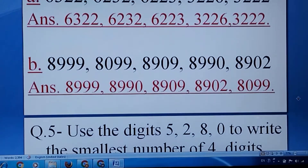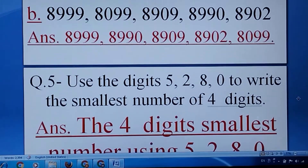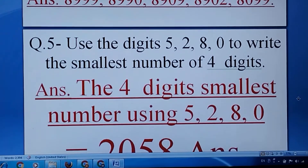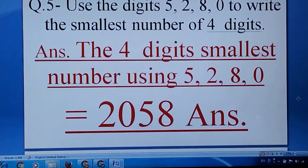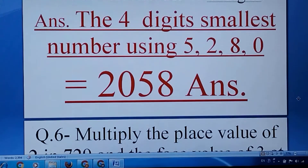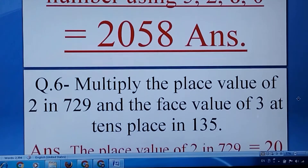Question number five: use the digits 5, 2, 8, 0 to write the smallest number of four digits. Please check. The answer is 2058.